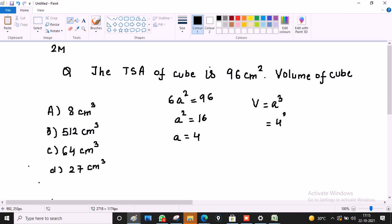Then volume of the cube is A cube. 4 cube is 64 cm³. So C is the correct option.